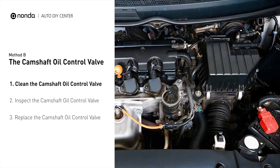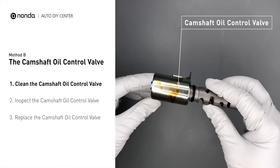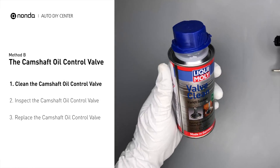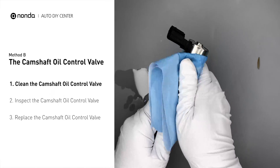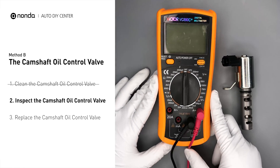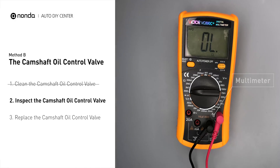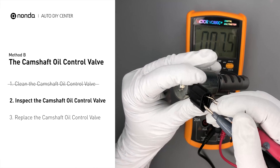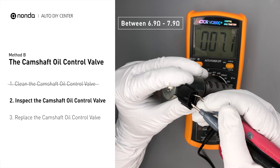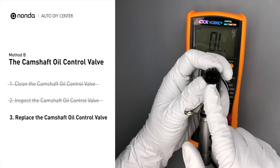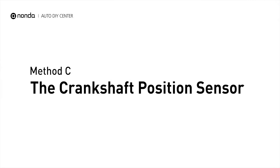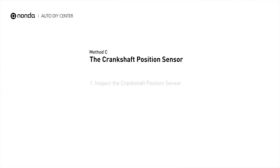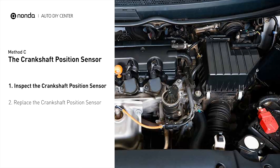Method B: The Camshaft Oil Control Valve. The camshaft oil control valves are usually located in cars that have engines with variable valve timing systems. First, carefully remove the camshaft oil control valve from the engine. Use a valve cleaner to clean it, then use a multimeter to test the valve. At an ambient temperature of 68 degrees Fahrenheit, the valve resistance should be between 6.9 ohms and 7.9 ohms. If you do not get a reading in this range, the camshaft oil control valve is faulty and needs to be replaced.